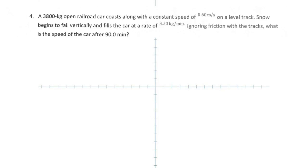Here's the fourth problem. In this problem you have a 3,800-kilogram open railroad car that is coasting along with a constant speed of 8.6 meters per second on a level track. Snow begins to fall vertically — and that's important, because vertical and horizontal do not affect each other. So the snow falling into the railroad car does not constitute an external force; it's just an internal force. The snow begins to fill the car at a rate of 3.50 kilograms per minute, and ignoring friction with the tracks, what is the speed of the car after 90 minutes?